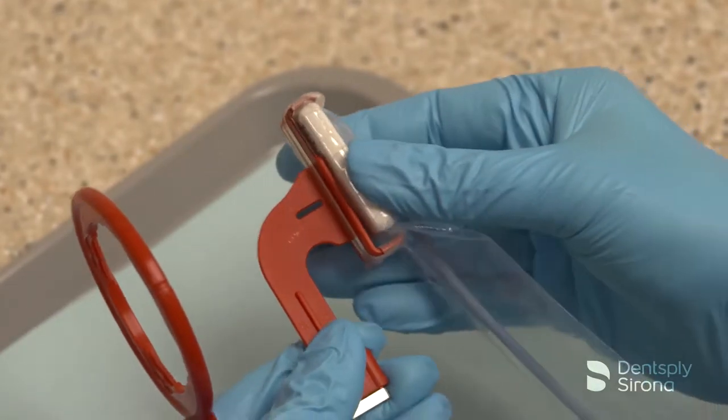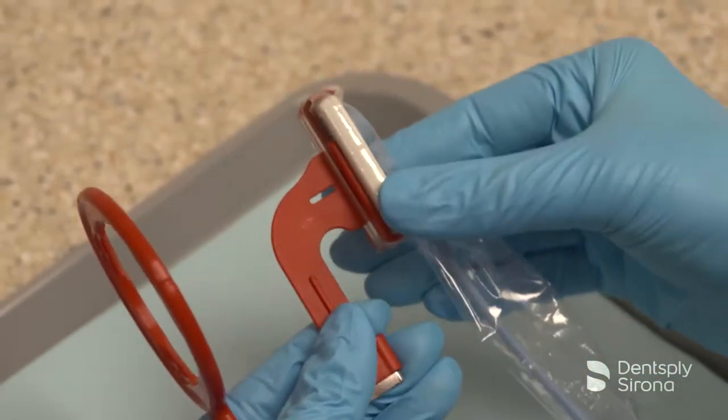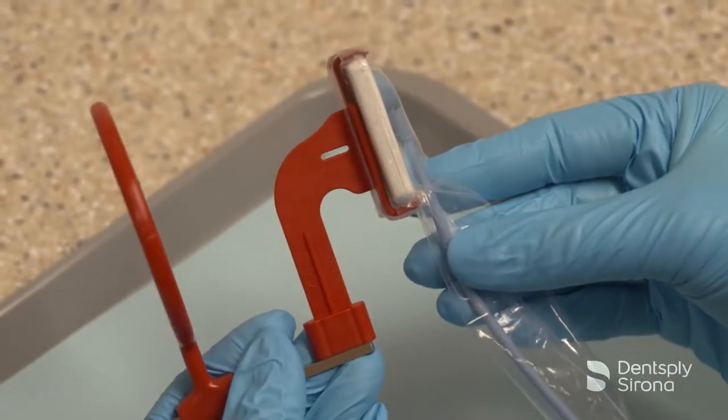Securely insert the sensor into the red bite block, making sure that the active side of the sensor is against the flat surface of the bite block.